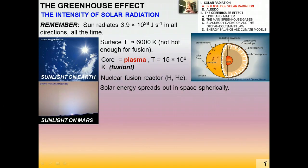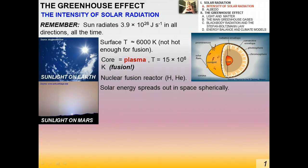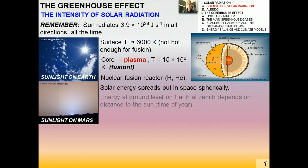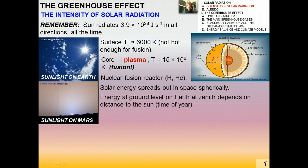Solar energy spreads out spherically in space. The amount of solar radiation reaching the Earth would be the amount passing through a spherical shell whose radius is the average distance between the Earth and the Sun. We'll talk a little bit more about that later.